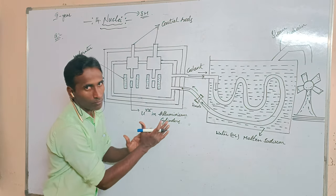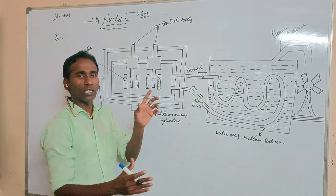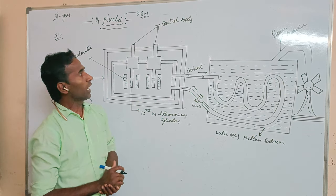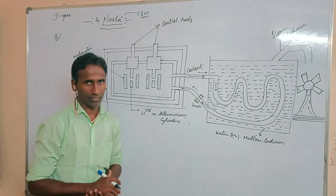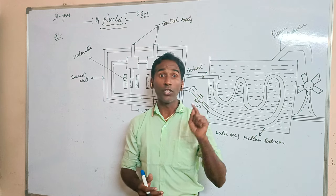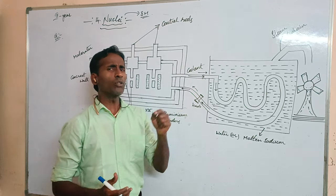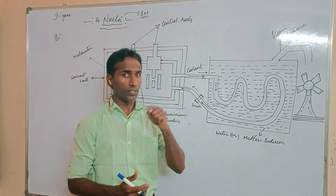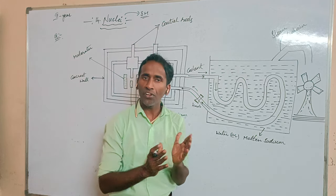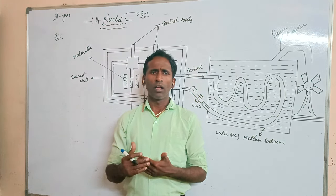This is a complete original diagram. Wherever you check, you will get this type of diagram only. First of all, what is a nuclear reactor? A nuclear reactor is a device which works on the principle of controlled chain reaction.